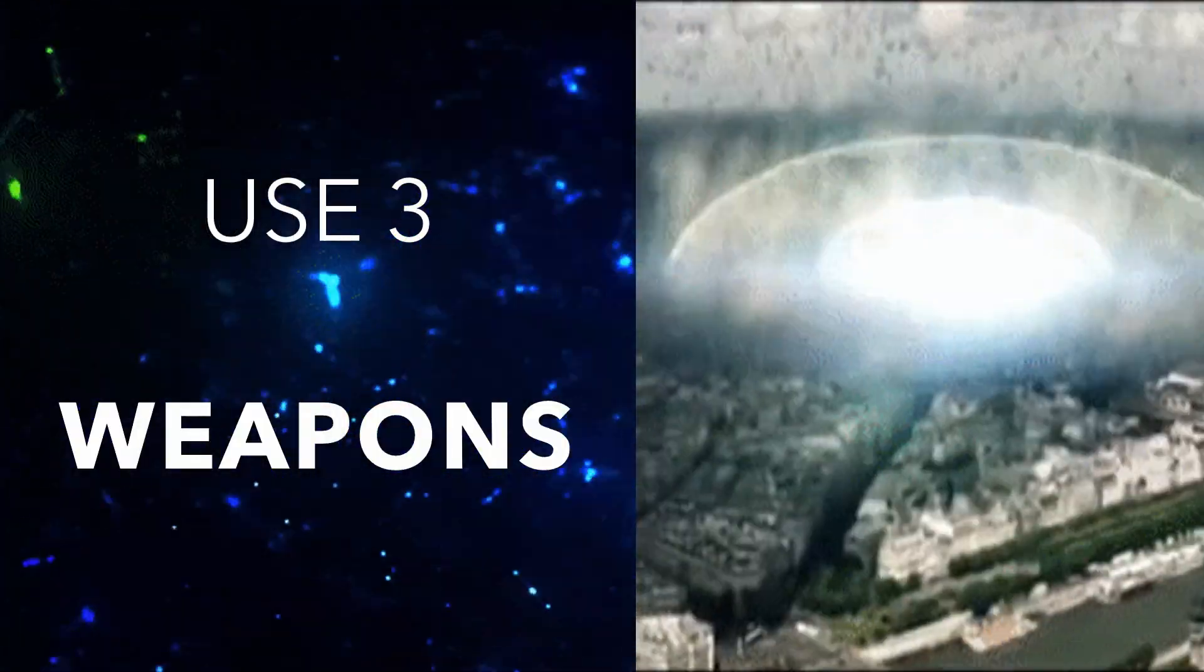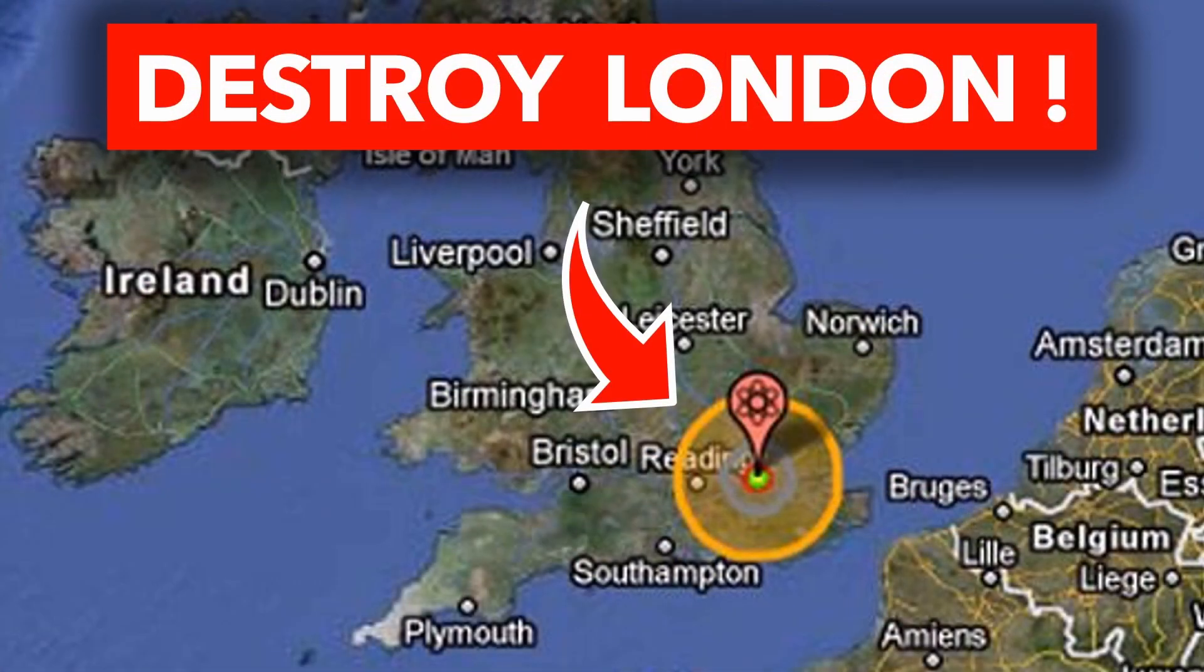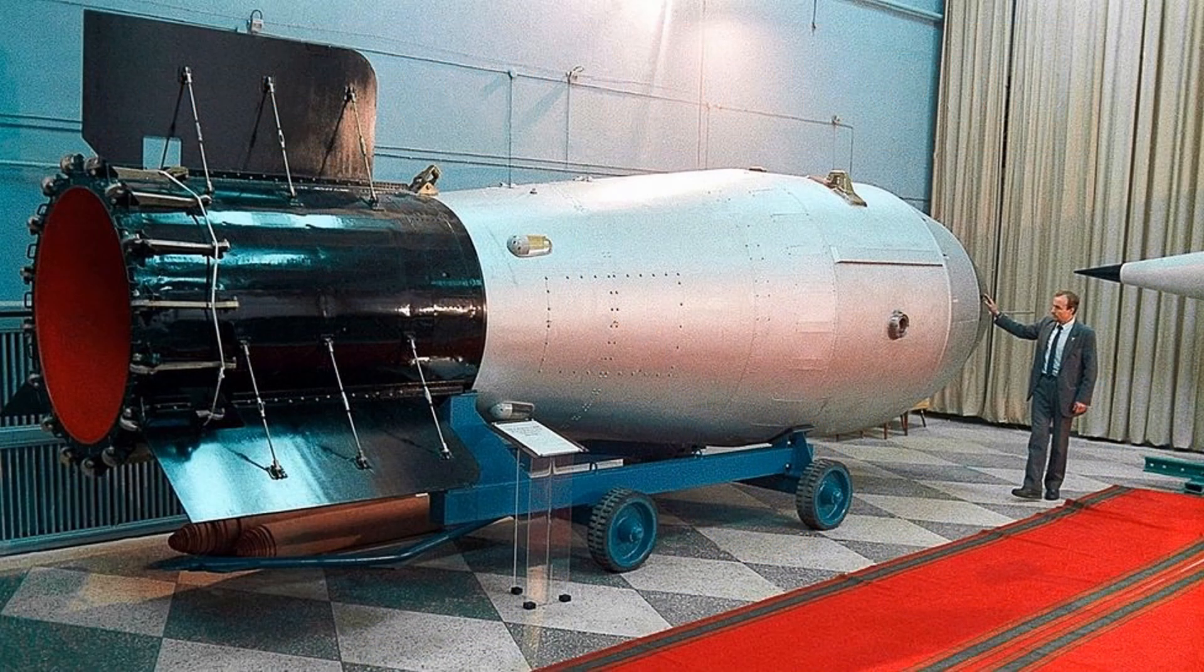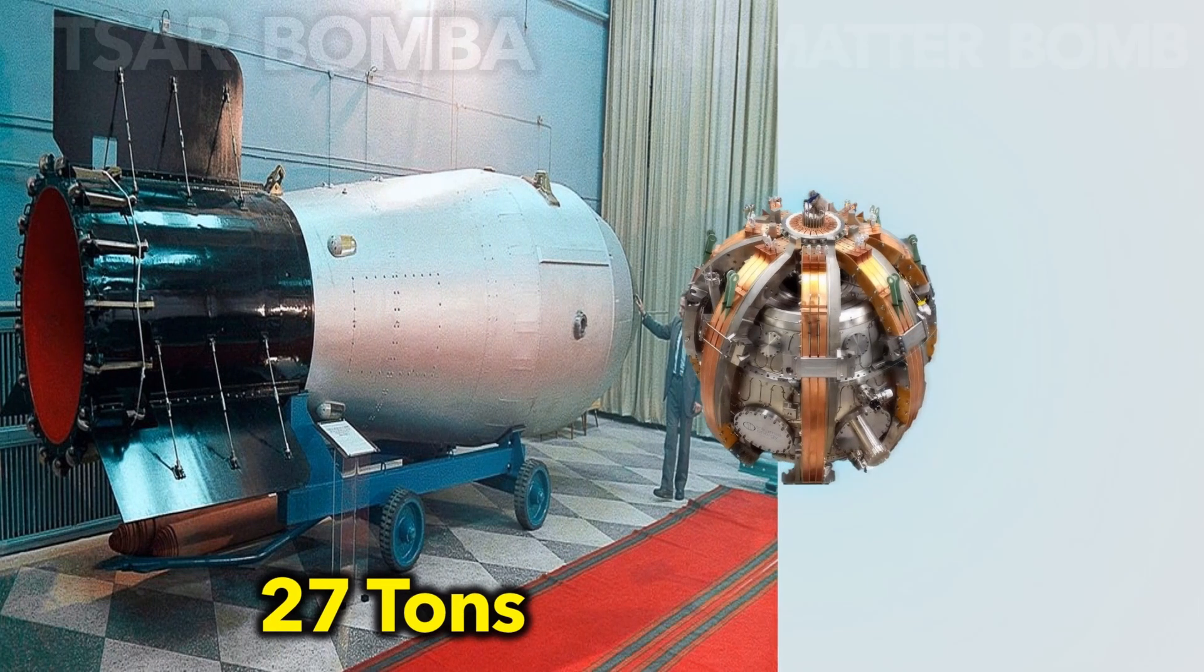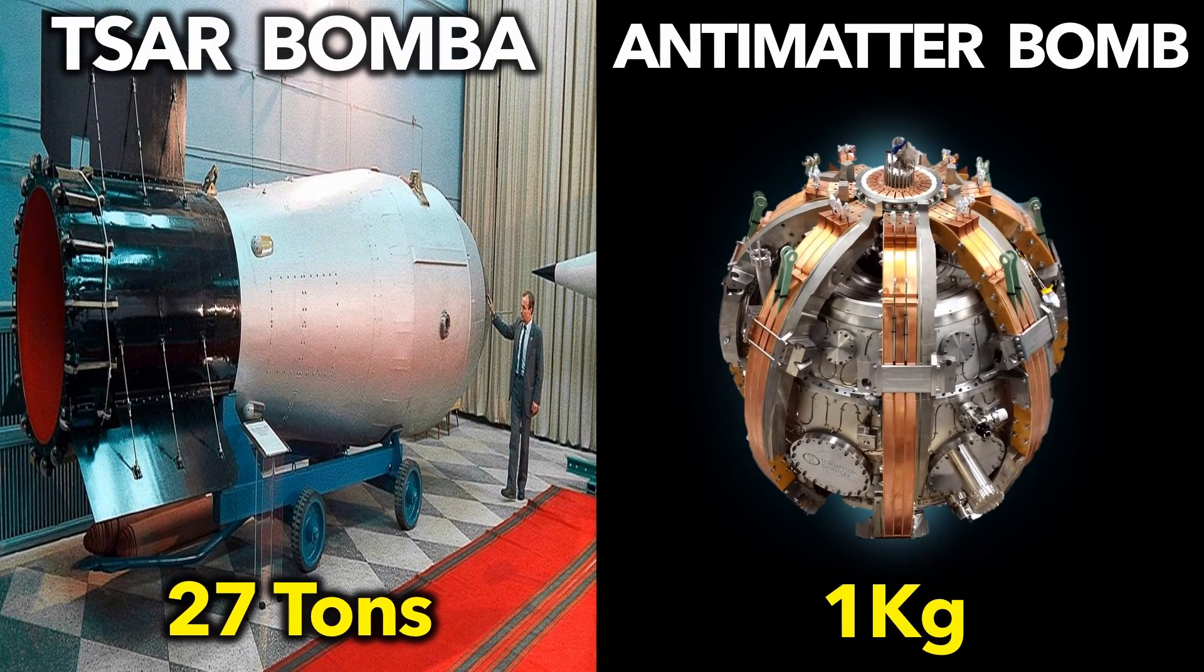Use three, weapons. The largest nuclear bomb ever detonated, the Tsar bomber, had a blast radius of 35 kilometres, enough to completely destroy the entire city of London. But the bomb was 8 metres long and weighed 27 tonnes. You would only need 1 kilogram of antimatter to release the same amount of destructive energy.